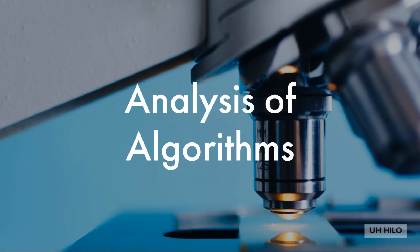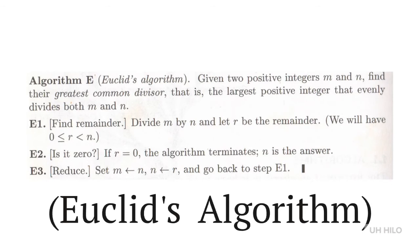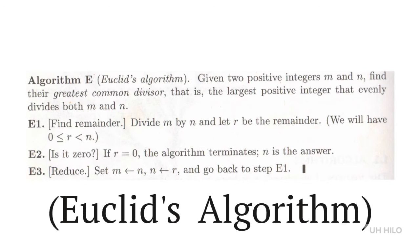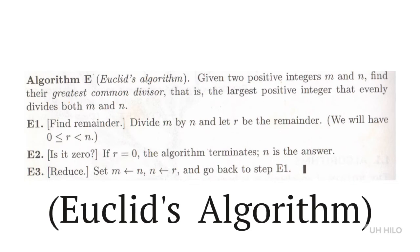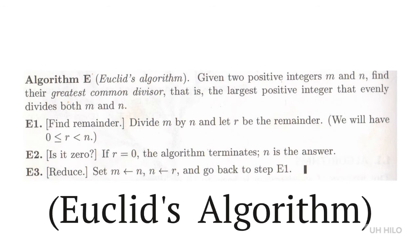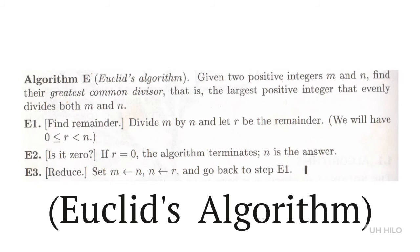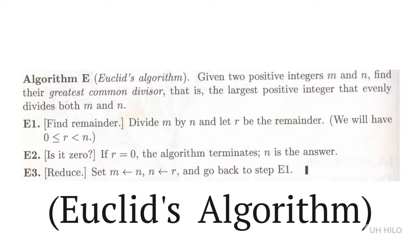This is Euclid's algorithm for finding the greatest common divisor of two integers m and n. Here, E is the identifying letter with the numbers being the steps. Comments are in parentheses, and the arrow is a replacement operator — 'M arrow n' means the value of variable m is to be replaced by the current value of n. If you see a double arrow in Knuth's notation, it means an interchange. It may be worth having step E0 to interchange the two values if m is less than n. The heavy vertical line at the end indicates the end of the algorithm.